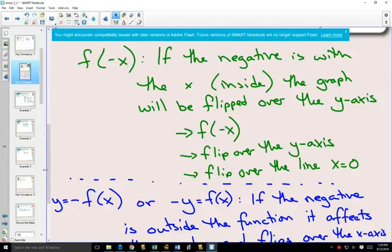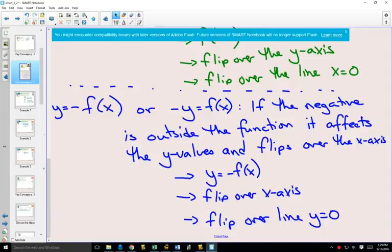So in the question, this question said a flip over or a reflection over the y-axis. So that's how I know it's connected to f of negative x. And if it had said a flip over the x-axis, then I would know it's related to negative f of x.